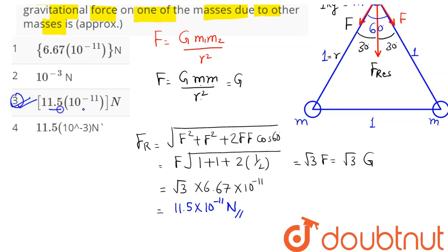Hence amongst the four options, option number 3, 11.5 into 10 power minus 11 newton, is the resultant force acting on the topmost mass along the downward direction of magnitude 11.5 into 10 power minus 11 newton. Hence option 3 is the correct answer, so 3 is our answer.